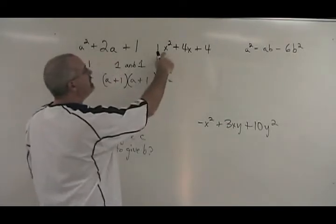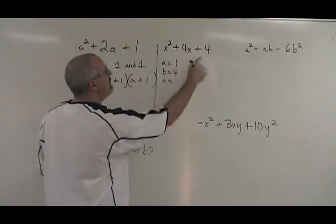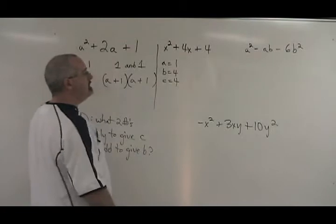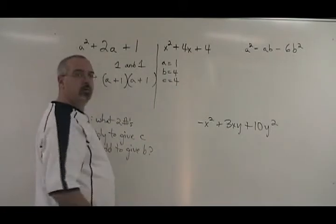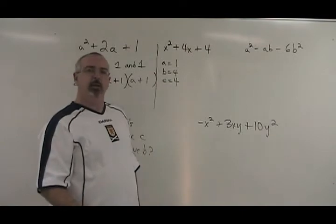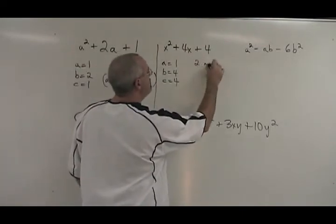In this one, the numerical coefficient of x squared is 1. The numerical coefficient of 4x is 4. And the numerical coefficient of 4 is 4. What two numbers multiply to give c, 4, and add to give b, 4? What two numbers multiply to give 4 and add to give 4? 2 and 2.